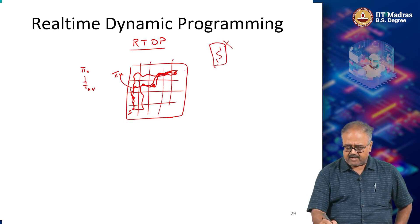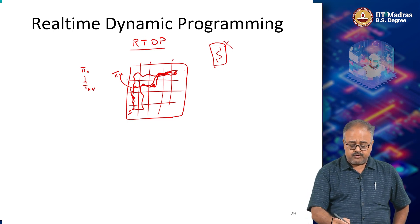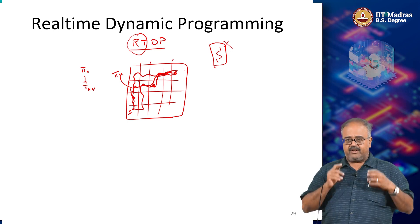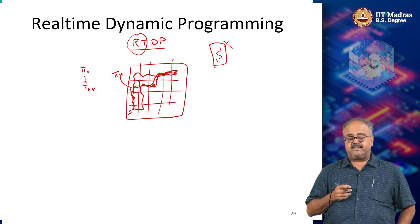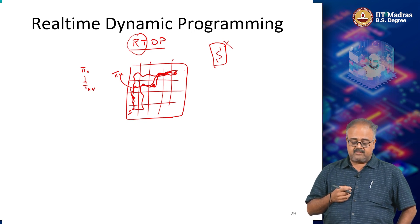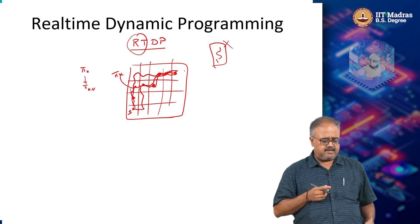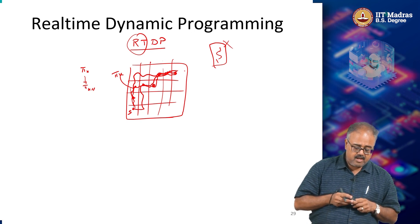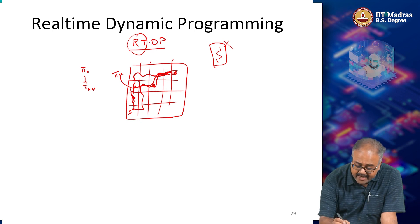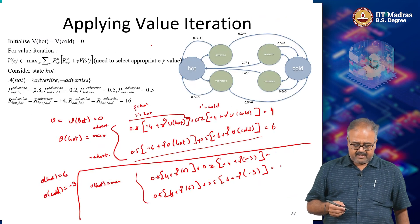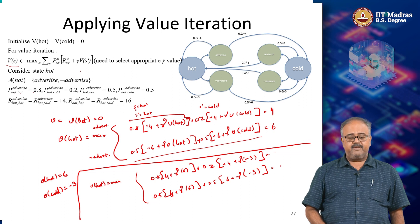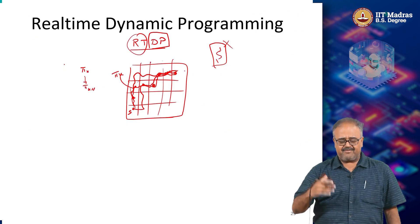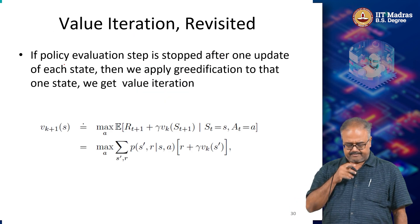This is basically the idea behind real-time dynamic programming: instead of updating your value function or policy on the entire state space, you choose a subset of states to update the value function on, based on a real execution. It is called real-time dynamic programming because you are actually executing the policy you are learning and figuring out which states you visit while executing it. The crucial thing is that it is still a dynamic programming update - meaning I still need to know p and r in order to make the RTDP update. This is a step towards building a full RL solution.